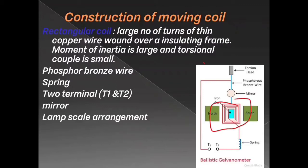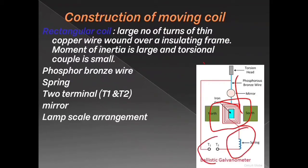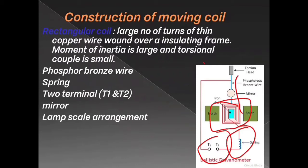Here you can see a rectangular coil placed on a soft iron core. The phosphorus bronze wire suspends the coil between the two magnetic poles and is attached to a mirror. The spring generates a restoring torque in the coil. The two terminals T1 and T2 are used for DC power supply only. The lamp-scale arrangement and mirror are used for measuring deflection. The horseshoe magnet is used to create a radial magnetic field so that the coil is always perpendicular to the magnetic field.